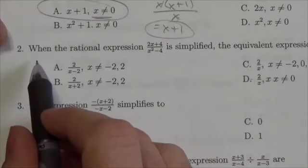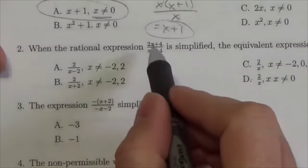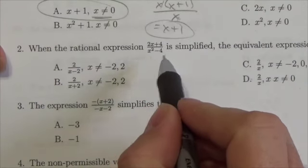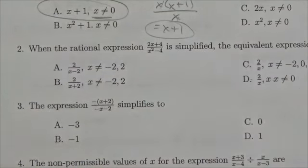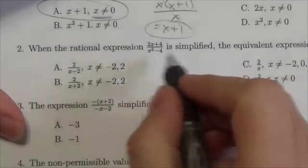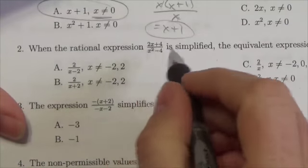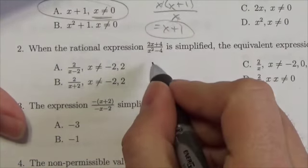So this question we read: when the rational expression (2x + 4) / (x² - 4) is simplified, the equivalent expression is... well, first of all, we've got a factor here.